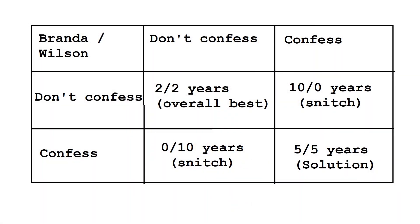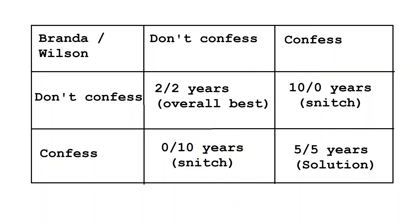Now let's take a look at the grid of their decision. Brenda and Wilson have two options: confess or don't confess. If both confess, they each get 2 years; if one confesses and the other doesn't, we can see that there are outcomes ranging from 5 to 5 years of jail.